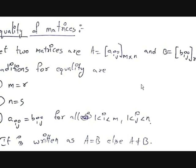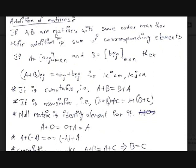Now let's see addition of matrices. If A and B are two matrices with the same order — they should have the same order m by n — then their addition is the sum of corresponding elements. Means if the element is in the first row and second column of the first matrix, you add it with the element in the first row and second column of the second matrix. So if A is Aij m by n and B is Bij m by n, then (A + B)ij is equal to Aij plus Bij.